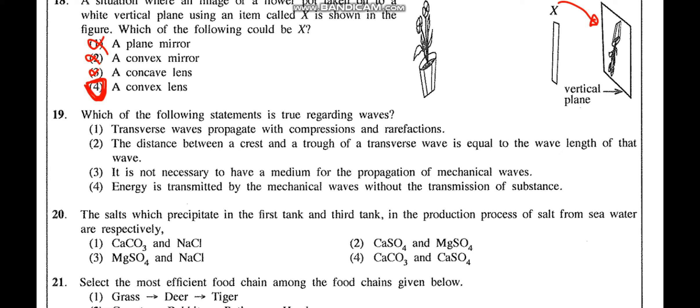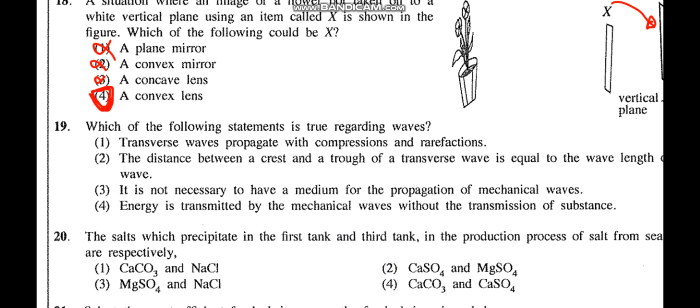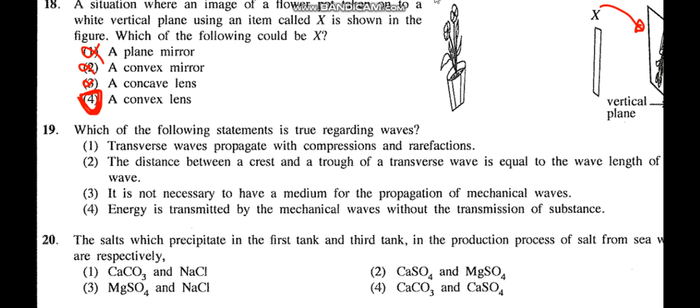Question 19: Which of the following is true regarding waves? Transverse waves do not propagate with compressions and rarefactions — that is longitudinal waves. The distance between a crest and a trough is not the wavelength; wavelength is crest-to-crest or trough-to-trough. Mechanical waves need a medium to propagate — so saying they do not need a medium is wrong. Energy is transmitted by a wave without the transmission of matter — that is true. The answer is the fourth option.